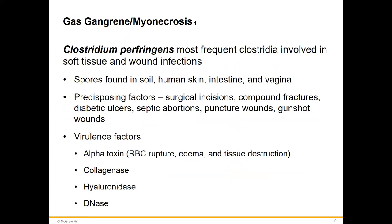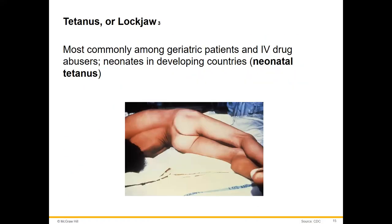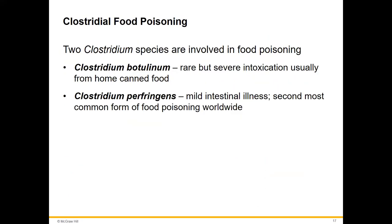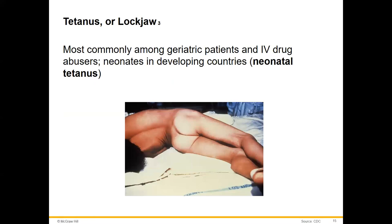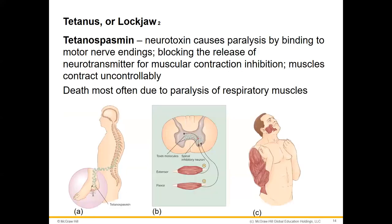To clarify: C. perfringens associated with gas gangrene and myonecrosis is a cutaneous infection. Now we're talking about oral ingestion of C. perfringens causing the second most common form of food poisoning worldwide — versus C. diff being the second most common in industrialized countries specifically.